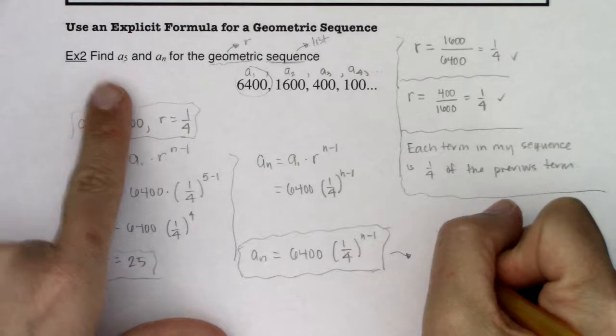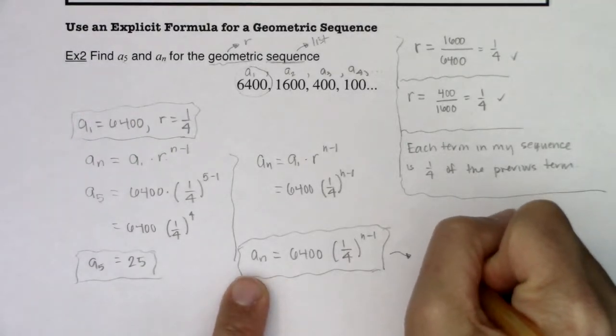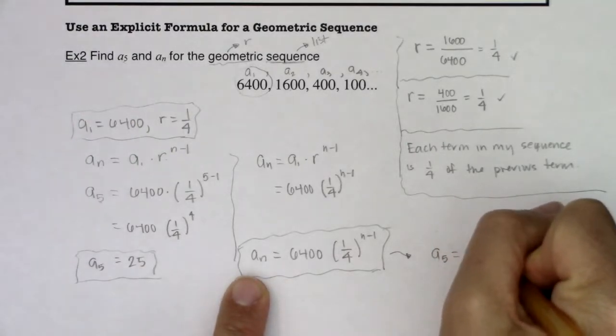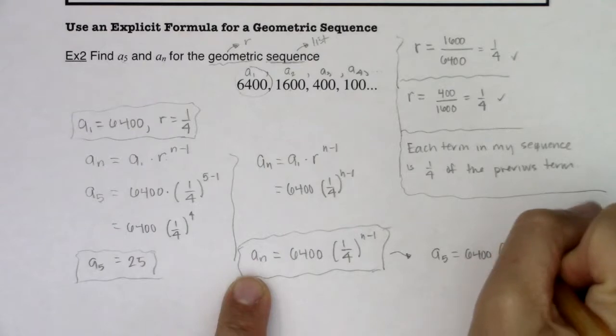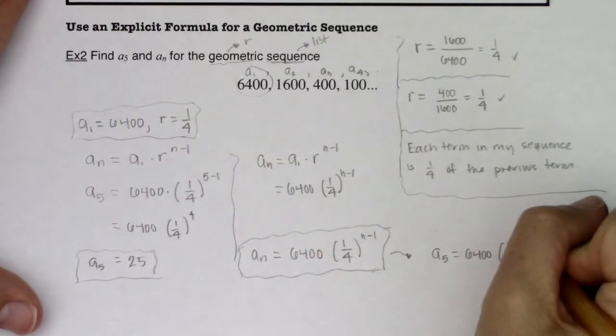Because again, if I did this, if I really wanted a sub 5, I know a sub 5 is 6,400 times 1 fourth to the 5 minus 1. Well, that's exactly what we had over here.